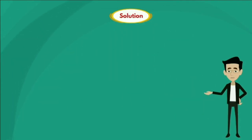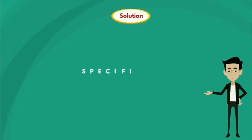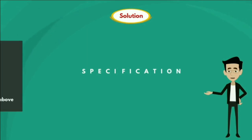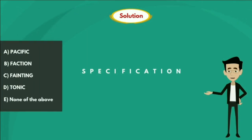Let's see the solution. Here the given word is S-P-E-C-I-F-I-C-A-T-I-O-N. Let's check the options to select the word which cannot be formed using the letters of the given word SPECIFICATION.